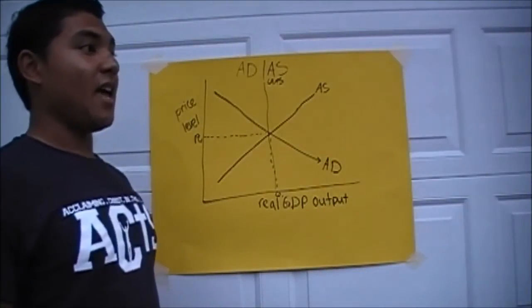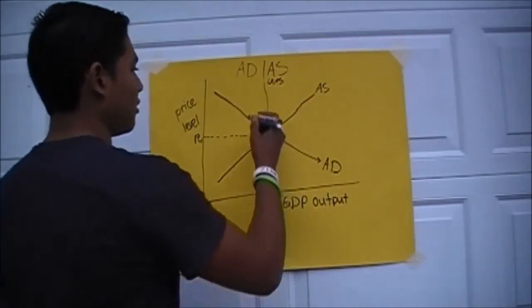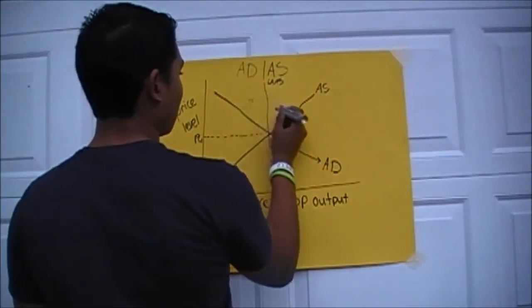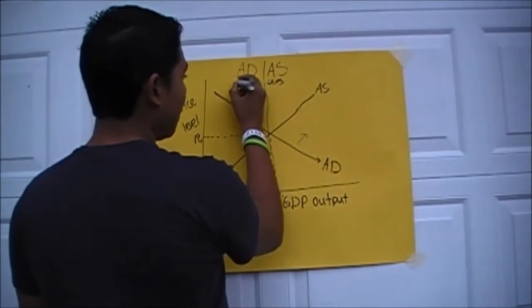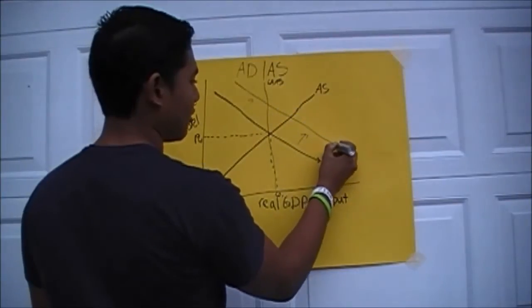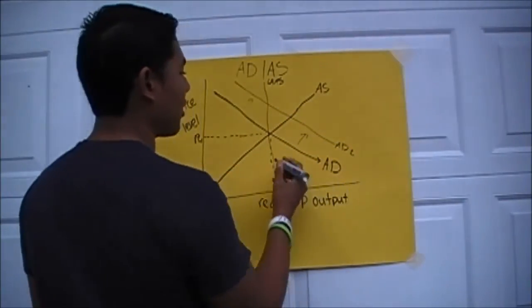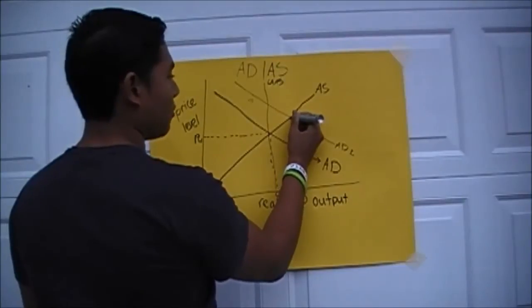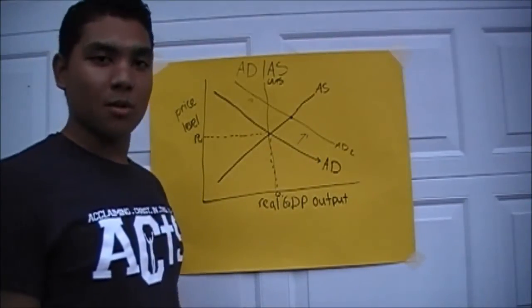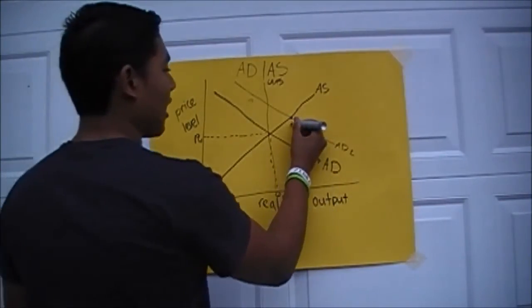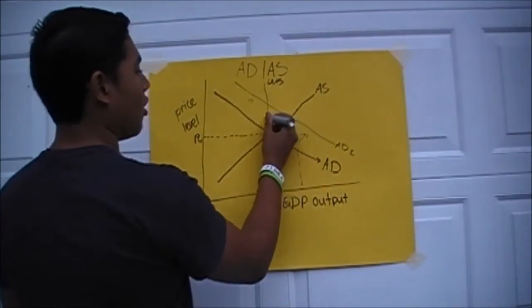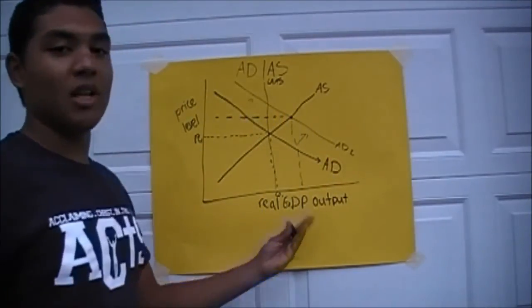So let's say that AD increases. So that'll bring us to a new equilibrium. So now you're saying price level and output increase.